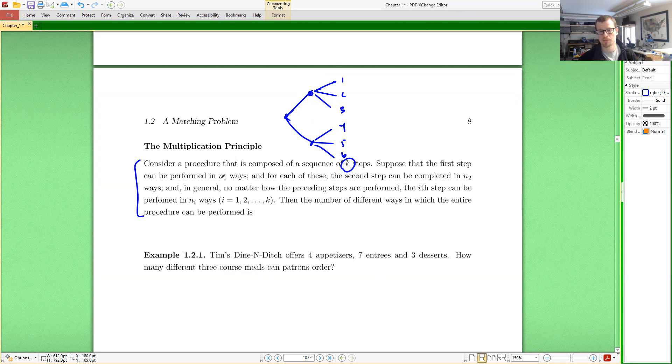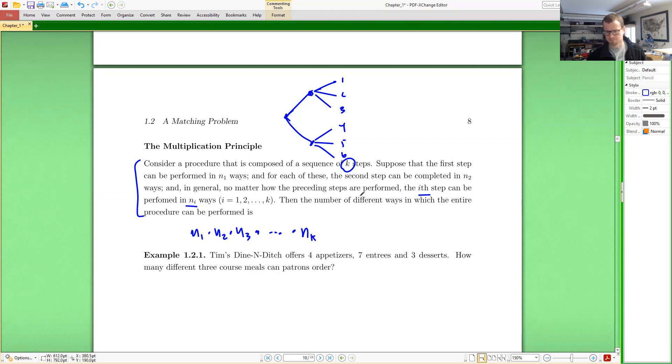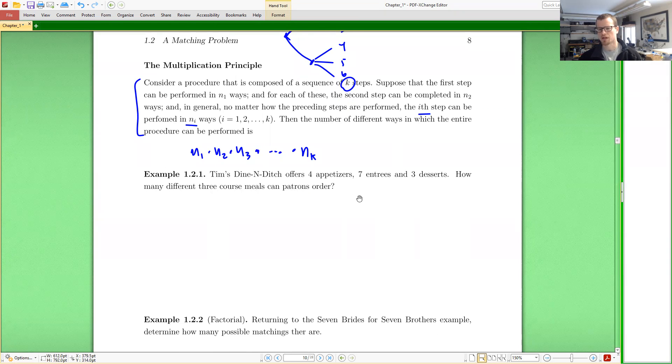And suppose that the first step can be performed in N1 ways, so two decisions for the food. And then for N2, the second step can be performed in three ways. So N2 is three. So the second step can be performed in three ways. No matter what I chose for the next one, it's always independent of that. So the ith step can always be performed in Ni ways and the number of different ways in which the entire procedure can be done, the way I can make my decisions, is N1 times N2 times N3 times all the way up to how many decisions need to be made or steps need to be done, K of them, Nk. So this is the multiplication principle.